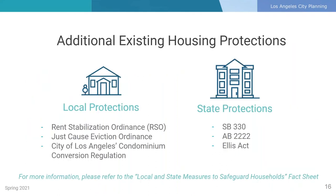In addition to the proposed plan's policies and zoning tools, the plan supports existing programs and regulations at the local and state level that protect households and residents. The City of Los Angeles has policies in place to safeguard households, including the Rent Stabilization Ordinance (RSO), the Just Cause Eviction Ordinance, and the City's Condominium Conversion Regulation. The City also works in cooperation with the State of California in implementing housing protection measures such as Senate Bill 330, Assembly Bill 2222, and the Ellis Act. For more information on these programs, please refer to the Local and State Measures to Safeguard Households fact sheet on our website.